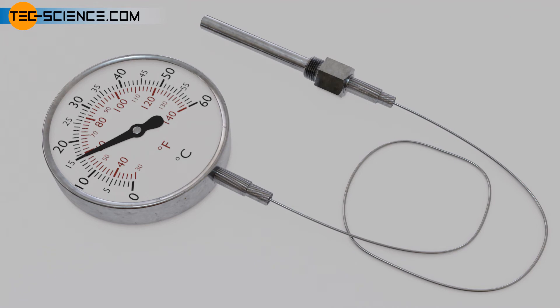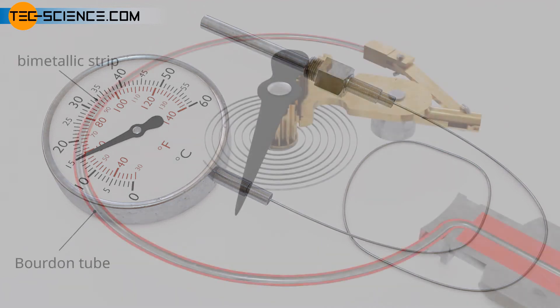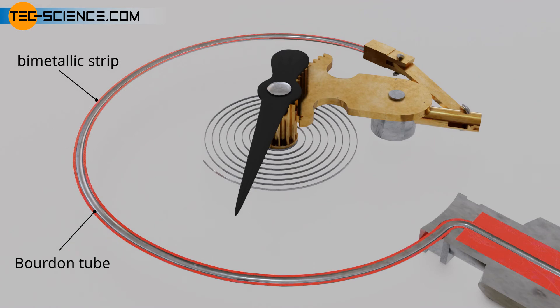If the gauge and thus the Borden tube are exposed to an increased temperature, then the pressure in the Borden tube also rises and indicates a higher temperature than is actually present at the measuring sensor. In order to minimize this influence of the housing temperature, a bimetallic strip can be applied to the Borden tube to compensate such temperature effects. If the housing heats up, the bimetallic strip will then bend the Borden tube slightly to correct the otherwise too high temperature displayed.